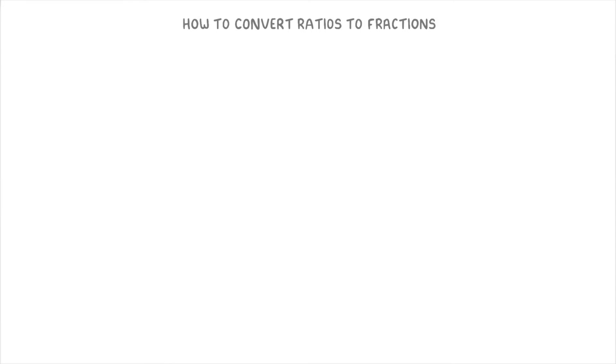Let's give this stuff another go with this question. So it says here that Ben has a bag of chocolate and plain cookies that are in the ratio of 4 to 3. And for part 1, we need to find the fraction of total cookies that are chocolate. And for part 2, we need to express the number of plain cookies as a fraction of the number of chocolate cookies.